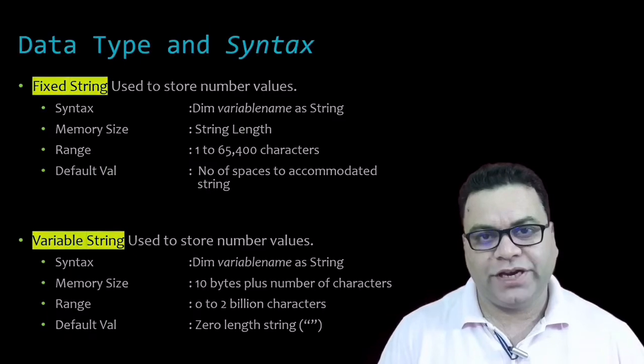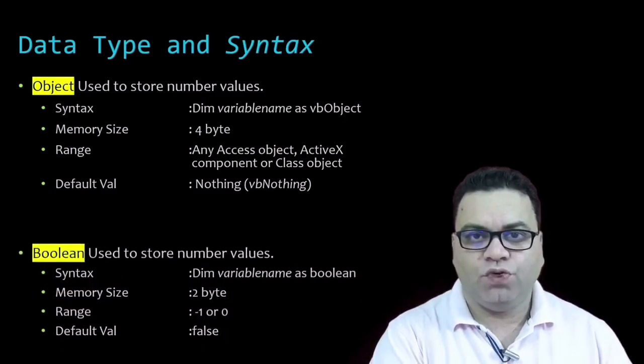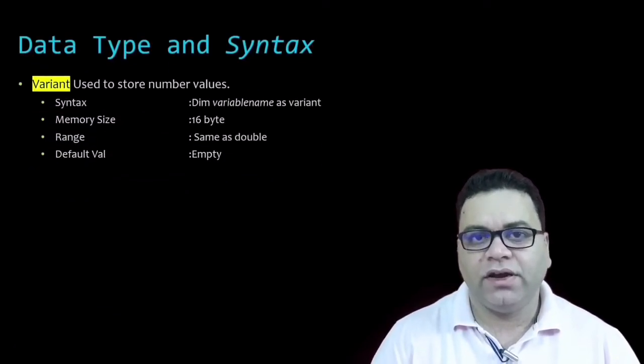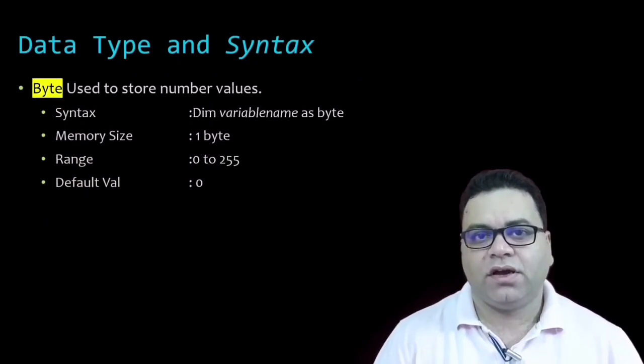If you want to deal with an Object, you define the variable as the Object data type — for example, a calendar object. Boolean is used when you want to store True or False. Variant is a data type that can store anything. Decimal is used when dealing with decimal numbers. The last one is Byte — it stores values from 0 to 255 and is the smallest data type for storing small numbers.